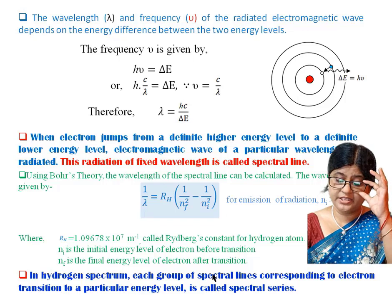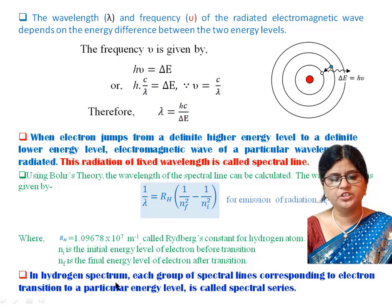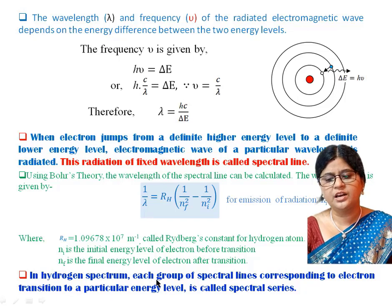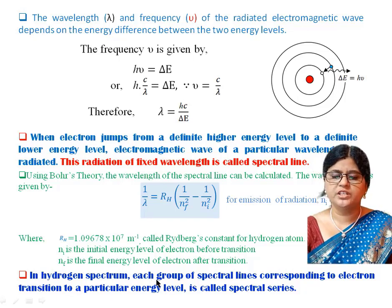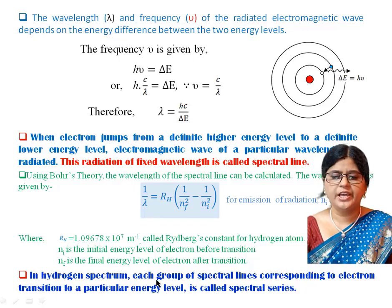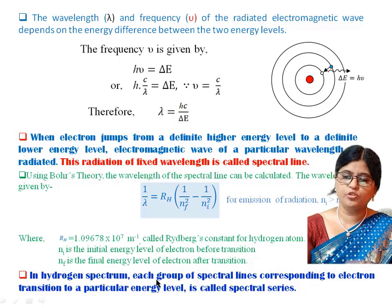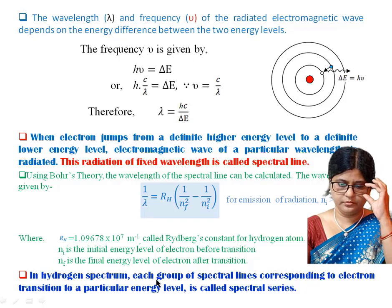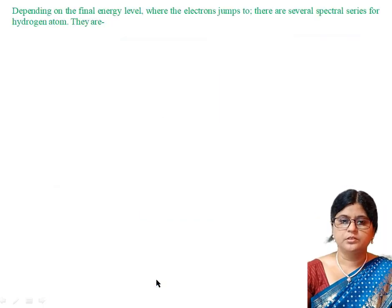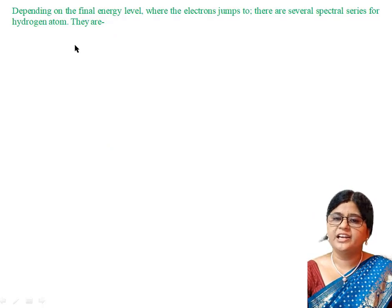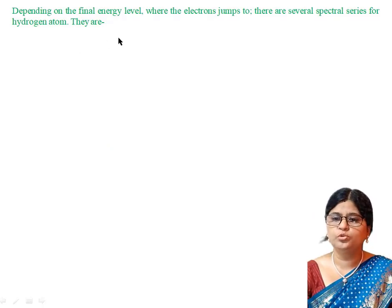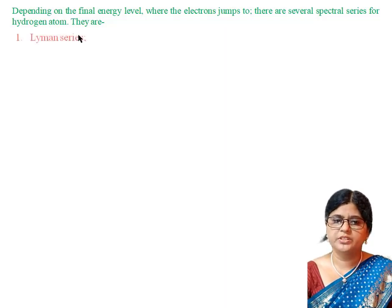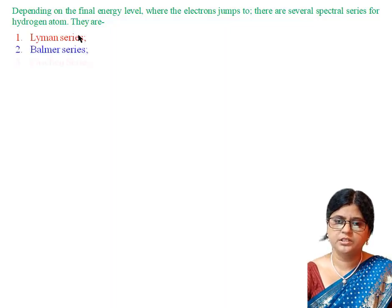Now, what is a spectral series? In the hydrogen spectrum, each group of spectral lines corresponding to electron transitions to a particular energy level is called a spectral series. Depending on the final energy level where the electron lands, there are several spectral series for the hydrogen atom. They are: Lyman series, Balmer series, Paschen series, Brackett series, and Pfund series.